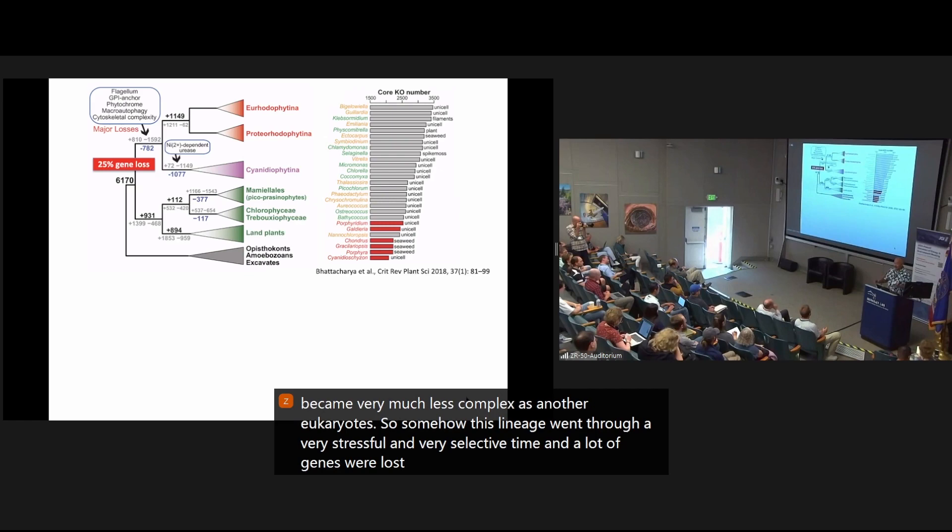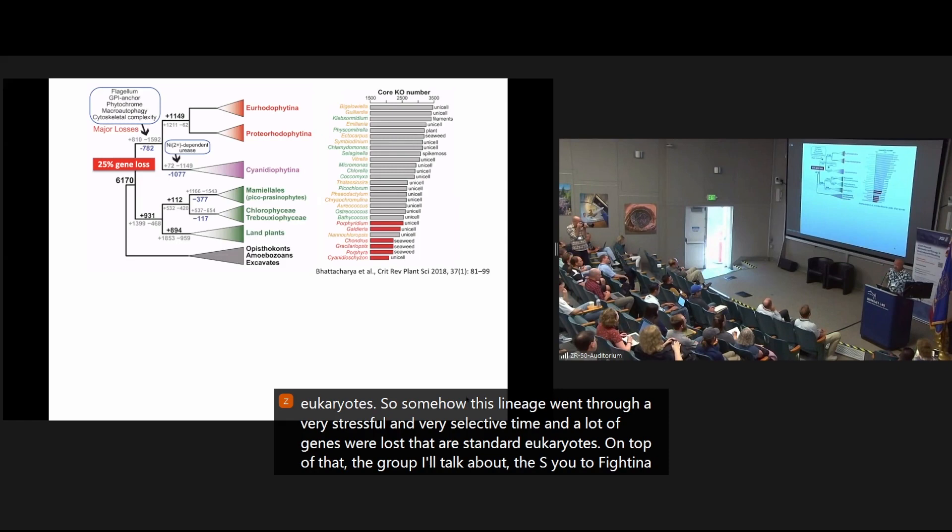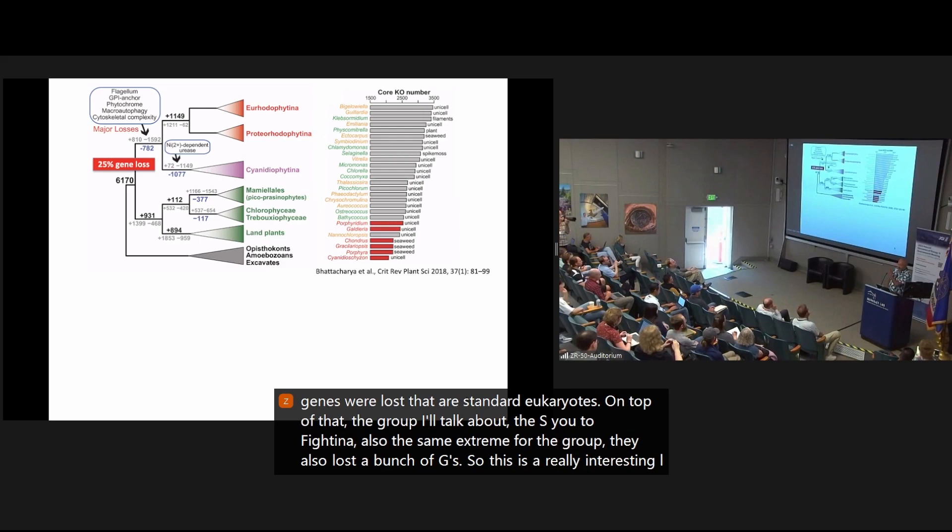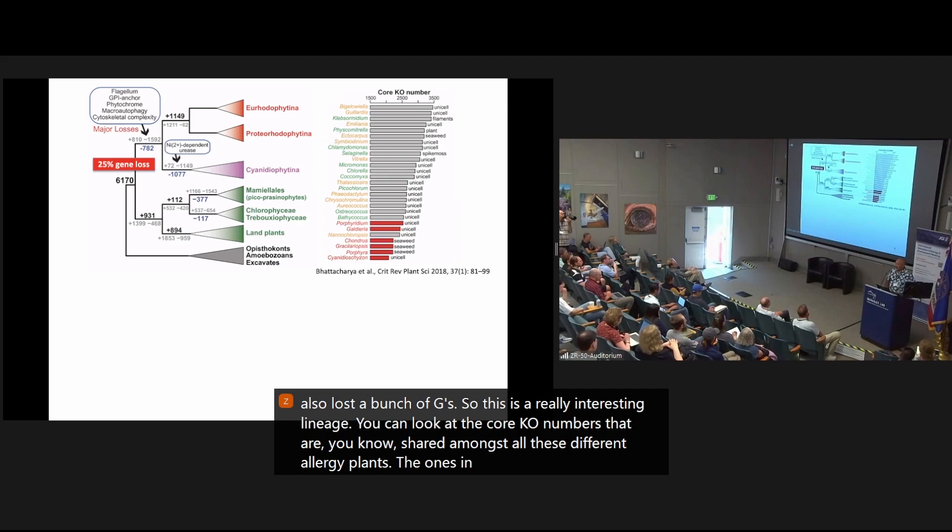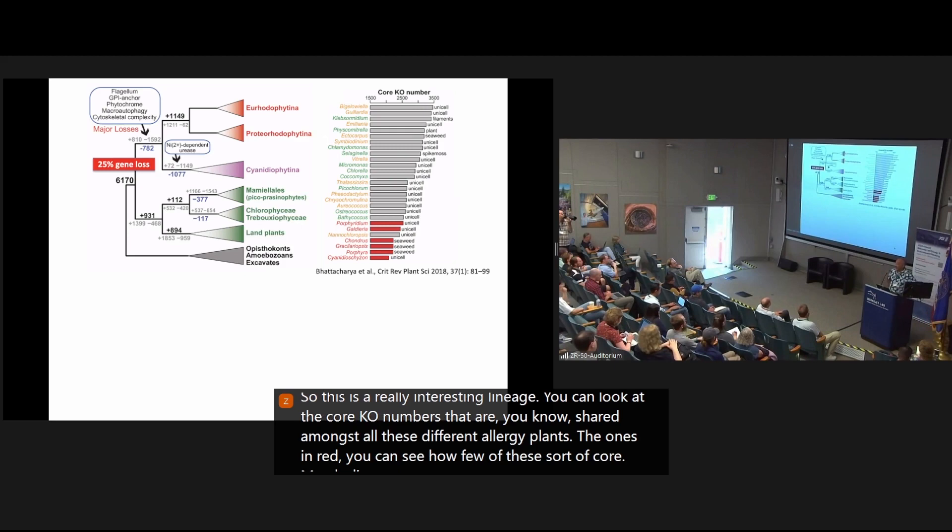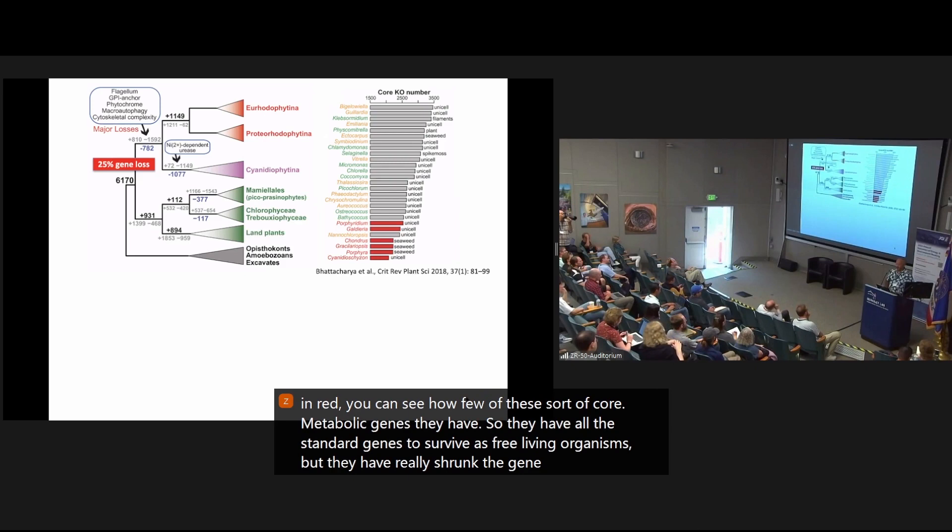On top of that, the group I'll talk about, the cyanidioficea, also the same extremophilic group, they also lost a bunch of genes. So this is a really interesting lineage. You can look at the core KO numbers that are shared amongst all these different algae and plants. The ones in red, you can see how few of these core metabolic genes they have. So they have all the standard genes to survive as free-living organisms, but they have really shrunk the gene families, introns, lots of things. So that makes some really interesting models.